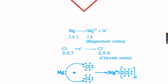Magnesium gives one electron to the first chlorine and the second electron to the second chlorine, forming the Mg²⁺ ion. Each chlorine forms a Cl⁻ ion. Instead of writing Cl twice, we write it as two chloride ions, and the compound MgCl₂ is formed.